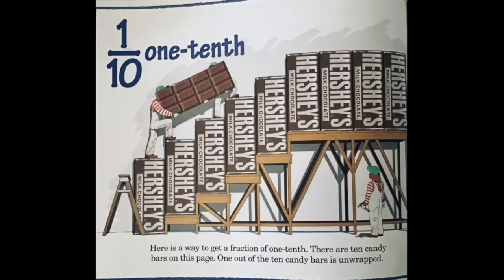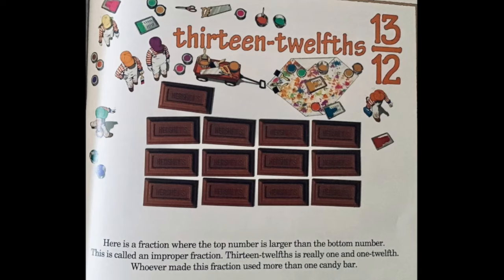Here is a way to get a fraction of one tenth. There are ten candy bars on this page, and one out of the ten candy bars is unwrapped. Here is a fraction where the top number is larger than the bottom number — this is called an improper fraction. Thirteen twelfths is really one and one twelfth. Whoever made this fraction used more than one candy bar.